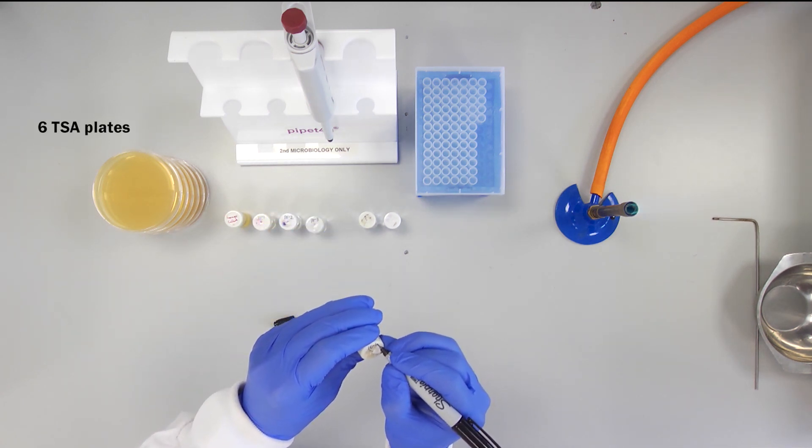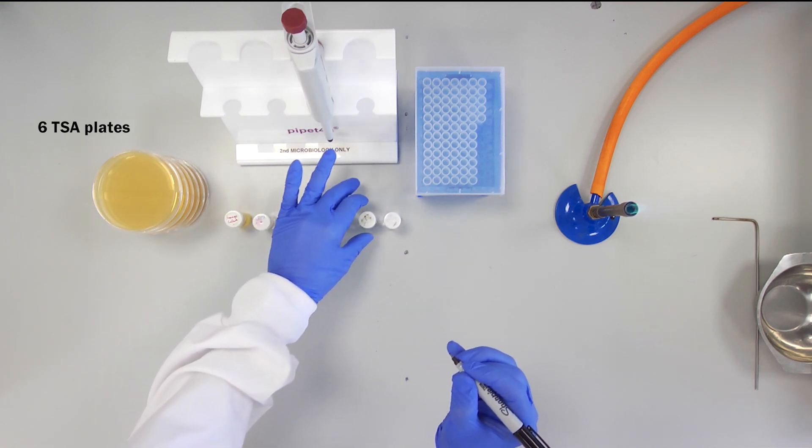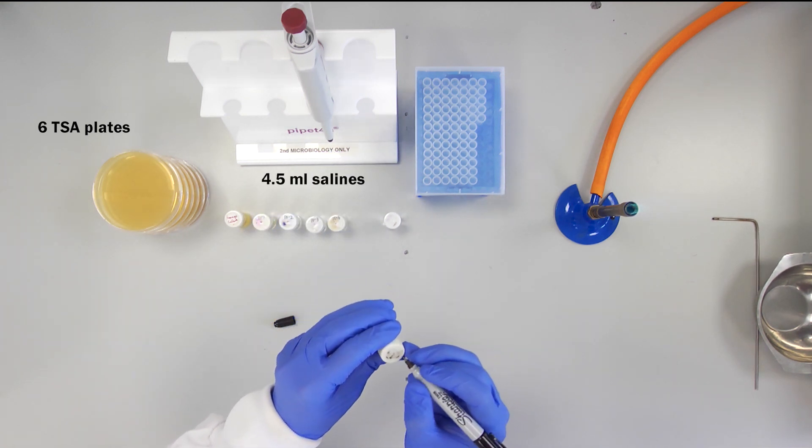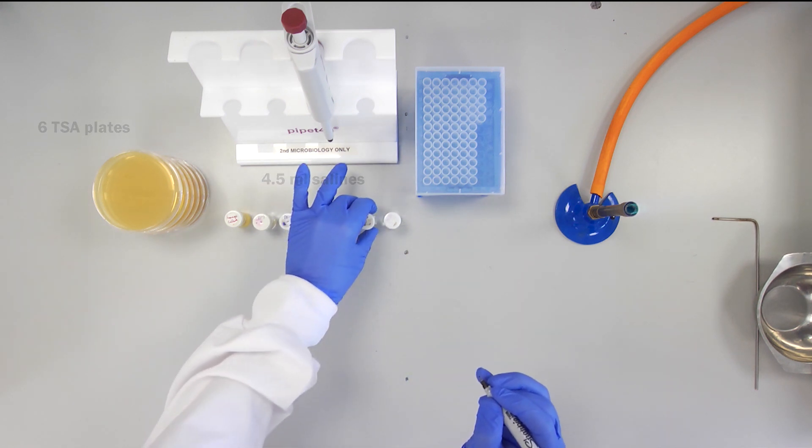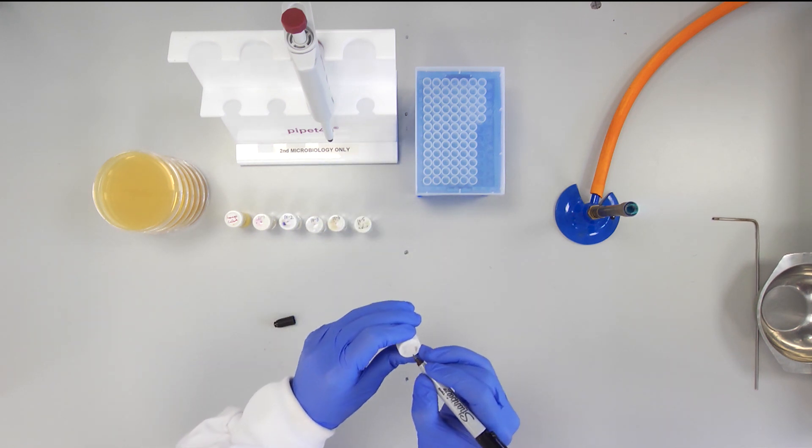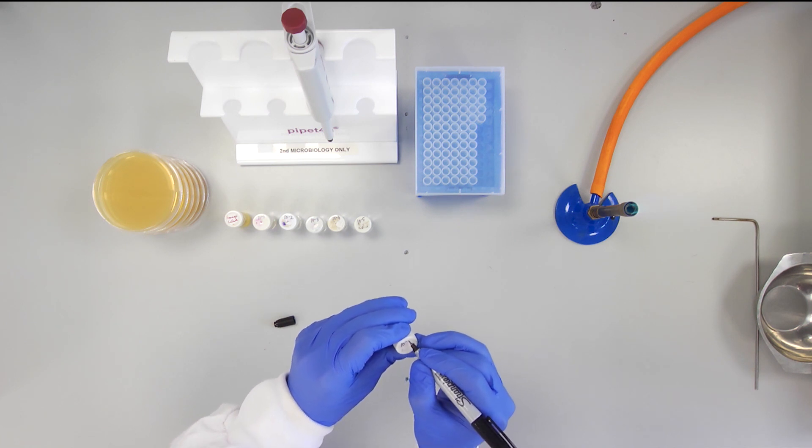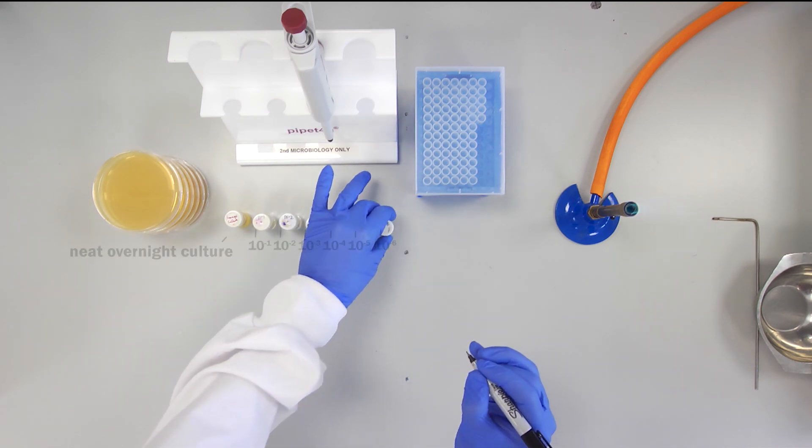Six TSA plates and six sterile 4.5 ml saline bijoux. Label the top of each bijoux with the dilutions from 10 to the minus 1 to 10 to the minus 6.